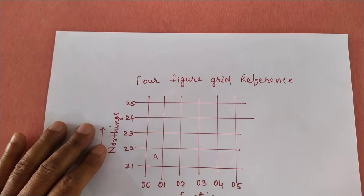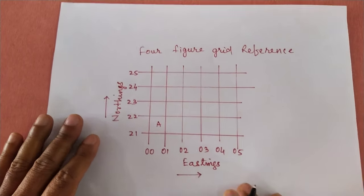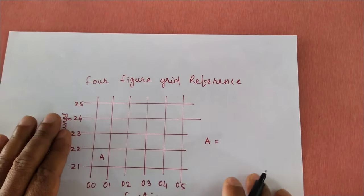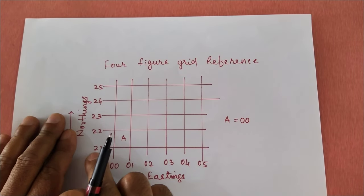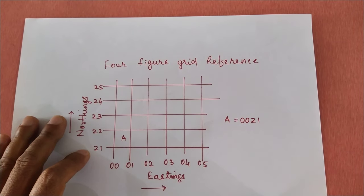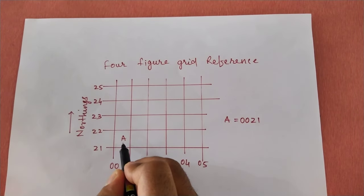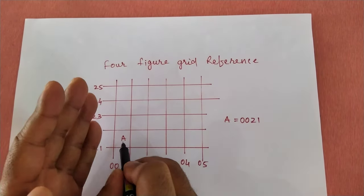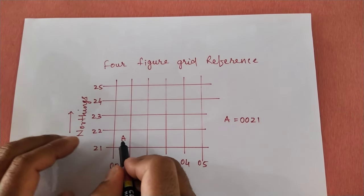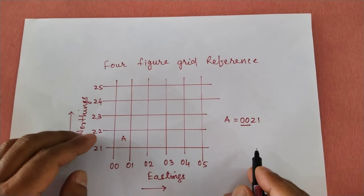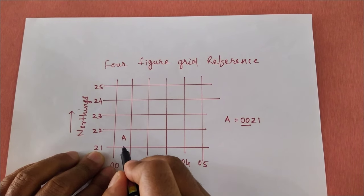You have to find out the four-figure grid reference of A. So what will be the four-figure grid reference? A will be first — Eastings: 00, and next one will be Northings: 21. Always in the four-figure grid reference, the object being asked about should be to the right side, and the left side of the Easting is taken as the reading. You can see the object is here at A, and the left side will be taken as the reading.